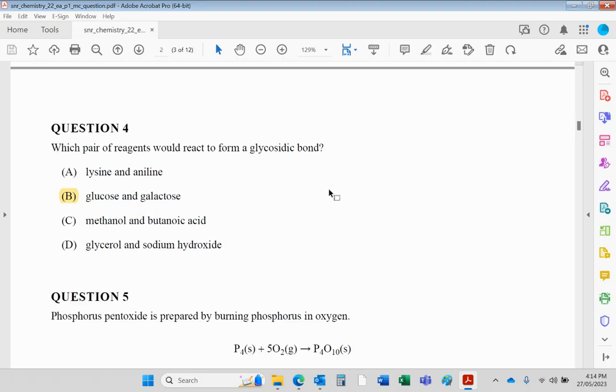Question four: the pair of reagents that would form a glycosidic bond are two monosaccharides or two carbohydrates. They would be, of course, glucose and galactose. They would form the disaccharide lactose.